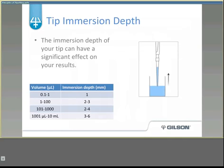Tip immersion depth is another important consideration, as it can have a significant effect on your results. If the tip is immersed too deeply in a sample, droplets will form on the outside of the tip and be deposited along with the sample. If the tip is not immersed deeply enough, vortexing can occur and the pipette will not aspirate the selected volume.